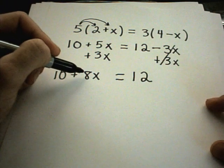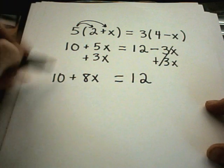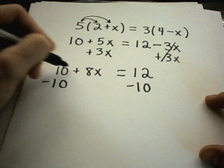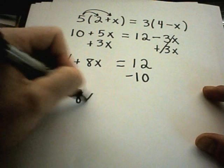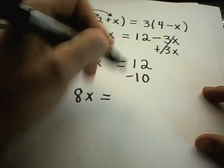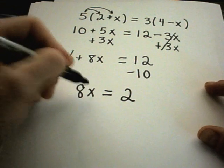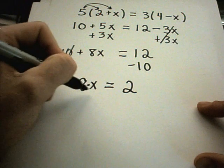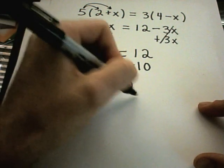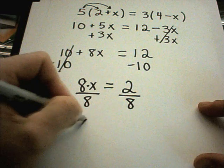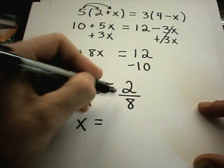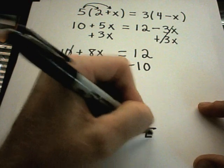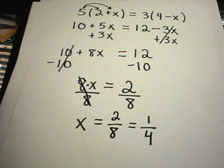And again, my goal is to get x by itself. Well, there's a plus 10 hanging out. I'll subtract 10. Subtract 10. The 10s again cancel out. I'm left with 8x equals 12 minus 10, which is 2. And again, now I'm multiplying by 8. To undo multiplication, I'll simply do division. So I divide by 8, divide by 8. I'll get x equals 2 over 8, which I can reduce down to 1 over 4. And that will be my solution in this problem.